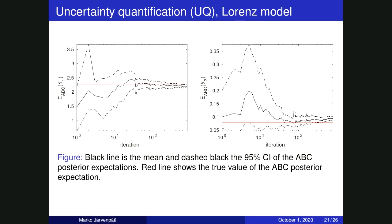Here is an illustration of the uncertainty quantification aspect. On the y-axis we have the ABC posterior expectation for two parameters of this model. The red line is the ABC posterior computed with extensive simulations using ABC-MCMC. As we run more iterations, our uncertainty gets smaller and we converge somewhere quite close to the true value — though not exactly, because the GP was not a perfect model. If we stop our algorithm at some point because we don't have more computational resources, we can at least in principle see how much uncertainty remains about the posterior expectation.